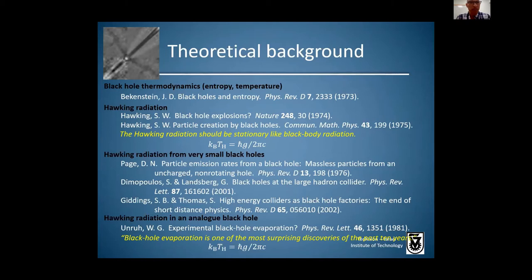This work builds upon a rich theoretical history, beginning with Jacob Bekenstein, who pointed out that black holes have entropy and temperature. Stephen Hawking predicted that a black hole should radiate at the very temperature predicted by Bekenstein, and that the Hawking radiation should be stationary in close analogy with black body radiation. He came up with the formula that the Hawking temperature is given by the surface gravity of the black hole and the speed of light.